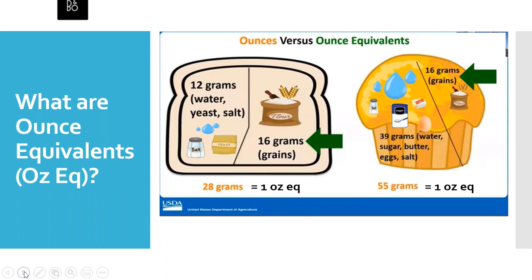The amount of grains contained in different grain foods varies greatly. For example, bread contains mostly flour, water, leavening, and salt — there aren't a lot of non-grain ingredients. But muffins contain flour plus sugar, some kind of liquid, eggs, sometimes fruit or other mix-ins, leavening and other flavorings — they contain a lot more non-grain ingredients. Ounce equivalents take into account the amount of grain ingredients versus non-grain ingredients in different foods, so we know we're always serving participants a specific amount of grains regardless of the type of food served.